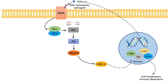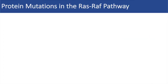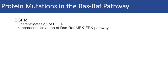We're going to focus on a few proteins in this pathway that, if mutated, can lead to increased activation or hyperactivation of this pathway — specifically EGFR, RAS, and RAF. There are many protein mutations in the RAS-RAF pathway that can lead to its hyperactivation. With the EGFR gene, mutations that cause overexpression of the receptor can lead to increased activation of the RAS-RAF pathway, because more receptor can bind to more ligand.